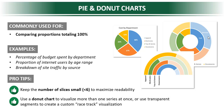If you don't know much about donut charts, don't worry — these charts are also very simple. Some examples of their use include: percentage of budget spent by department, proportion of internet users by age range, and breakdown of site traffic by source.